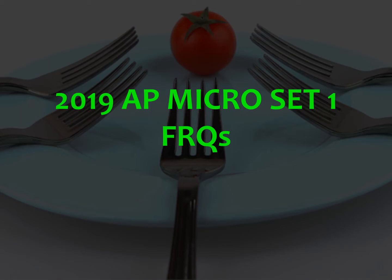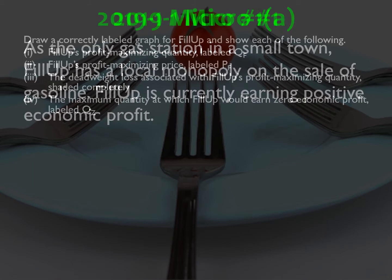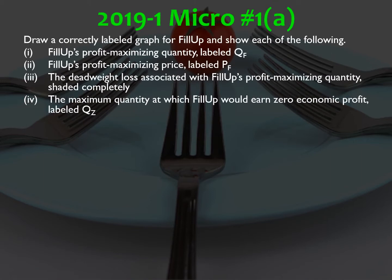Hello class, this is Mr. Liao and we are going to go over the 2019 micro questions set one. Number one: as the only gas station in a small town, Phillip has a local monopoly on the sale of gasoline. Phillip is currently earning positive economic profit. Part A: draw a correctly labeled graph for Phillip and show the profit maximizing quantity and price, the deadweight loss associated with Phillip's profit maximizing quantity, and the maximum quantity at which Phillip would earn zero economic profit.